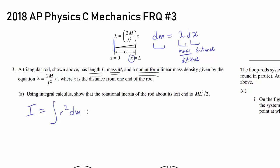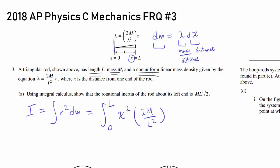So in our case, we have the integral going from zero to L of R squared DM. We know R is X, so X squared, and DM is lambda DX, and lambda is 2M over L squared times X. We make sure to include DX, and we want to integrate this symbolically. Let's take all the constants outside.